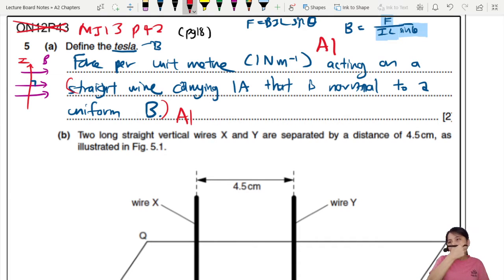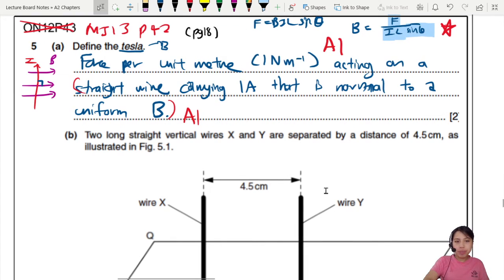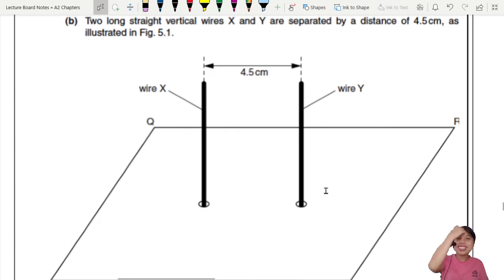So carrying 1 ampere, that is normal. Normal means perpendicular. To a uniform magnetic flux density, a.k.a. a uniform B. Two marks for this. First one, if you talk about force per unit meter, that is A1. What else?